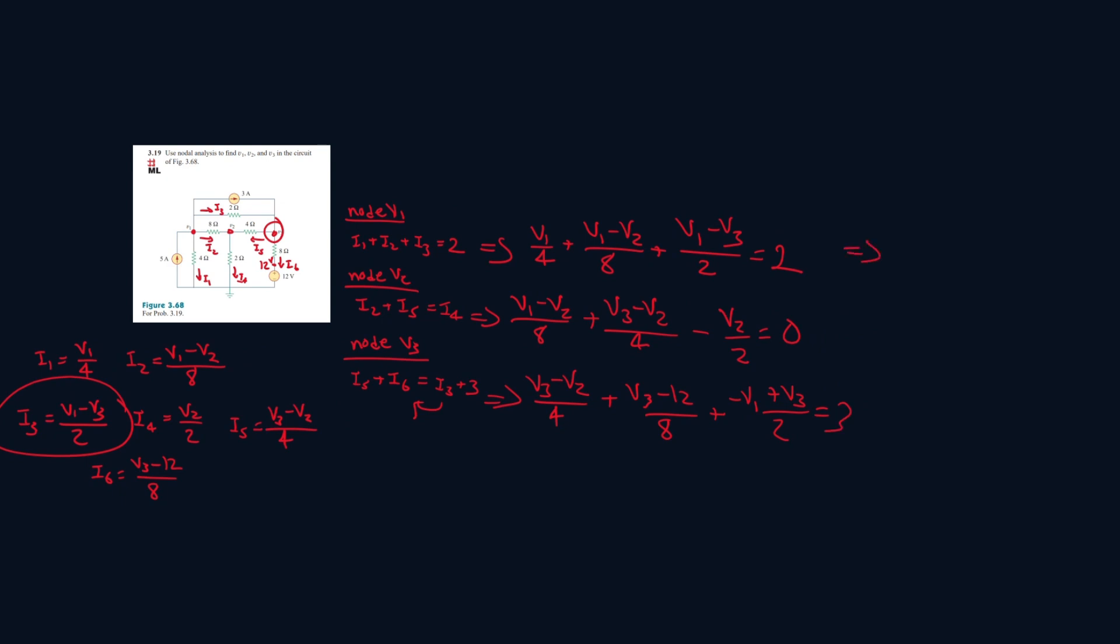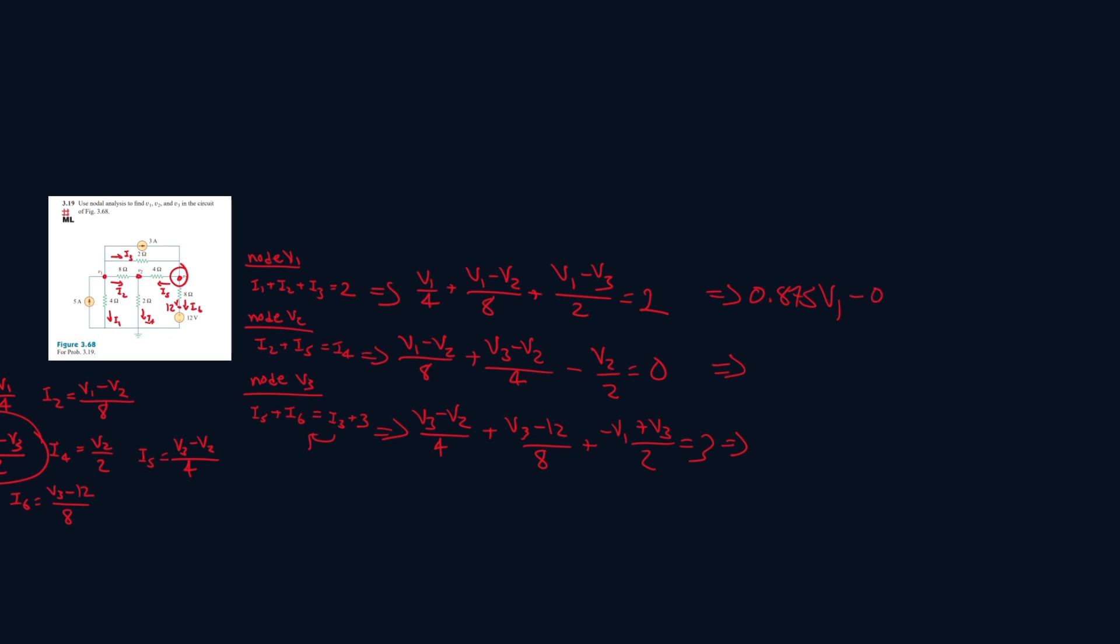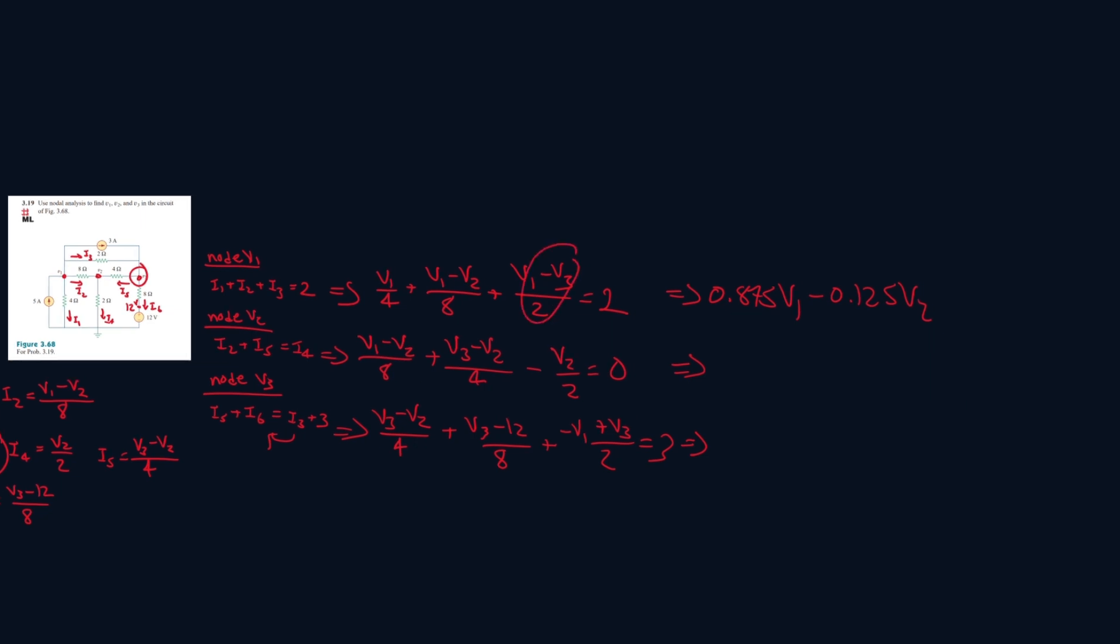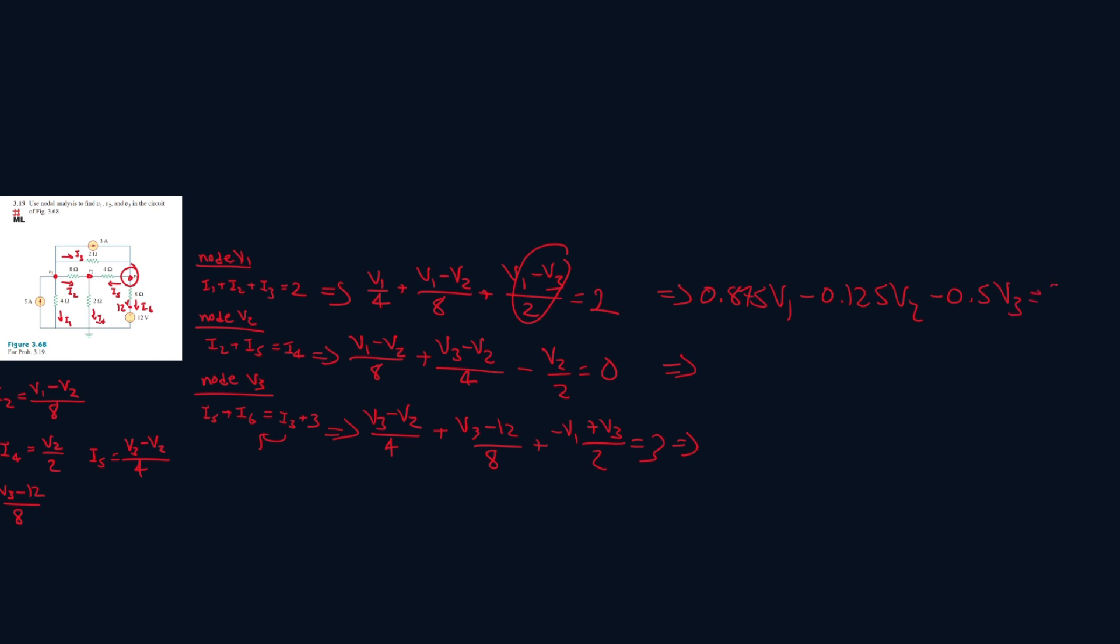Now, let's simplify all of these. V1 over 4 plus V1 over 8 plus V1 over 2 gives me 0.875 V1. We have V2 over 8, that's minus 0.125 V2. Then we have V3 over 2, that's just minus 0.5 V3, and this is equal to 2.